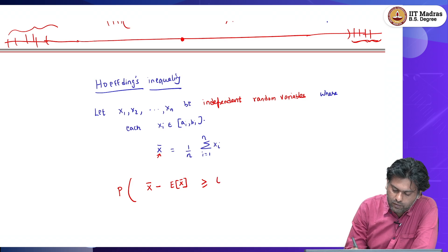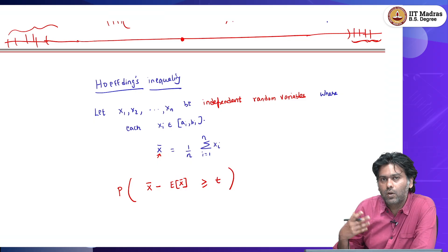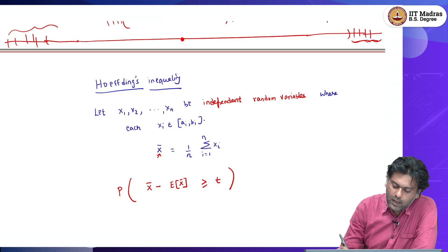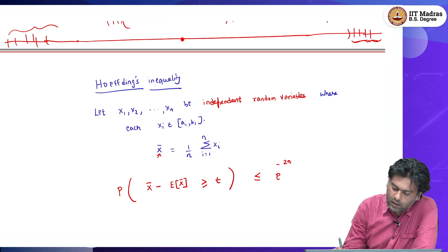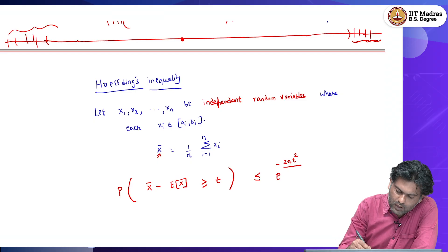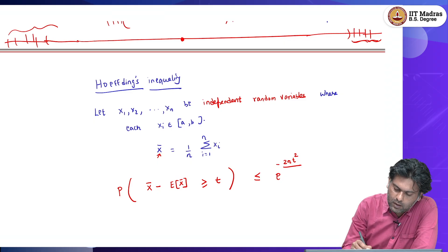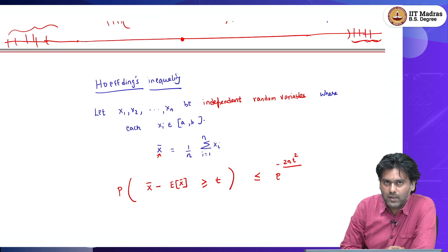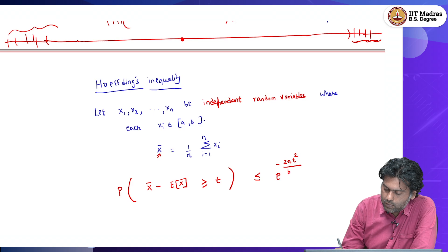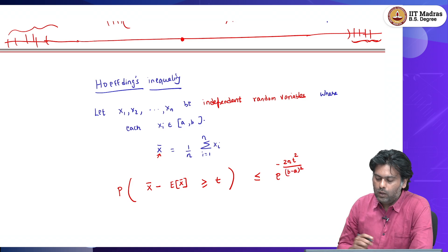Hoeffding says that the probability that this deviation — |x-bar minus E[x-bar]| — is greater than or equal to some value t is at most e to the minus 2nt squared divided by (b minus a) squared. If we simplify and say all random variables are bounded within the same range [a, b], then the denominator is (b minus a) squared.